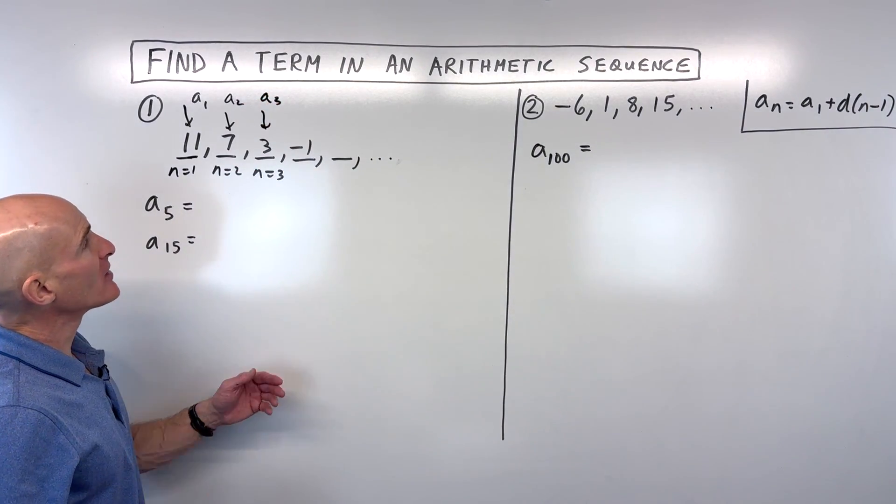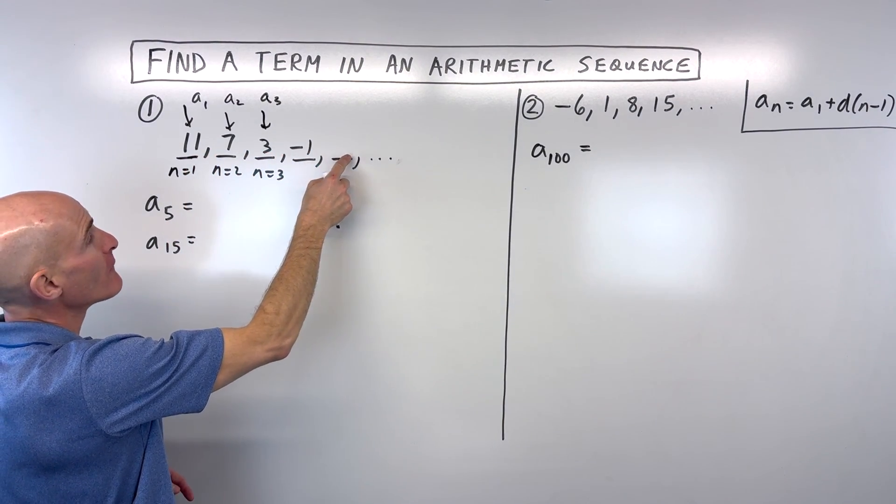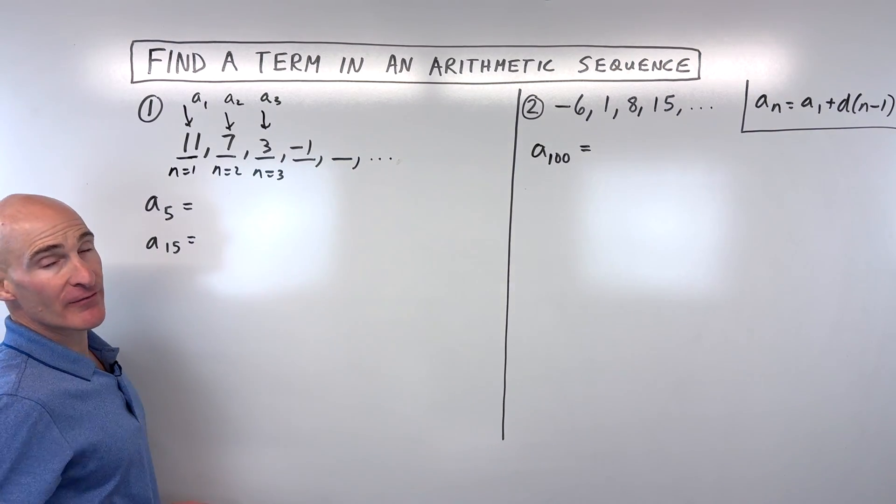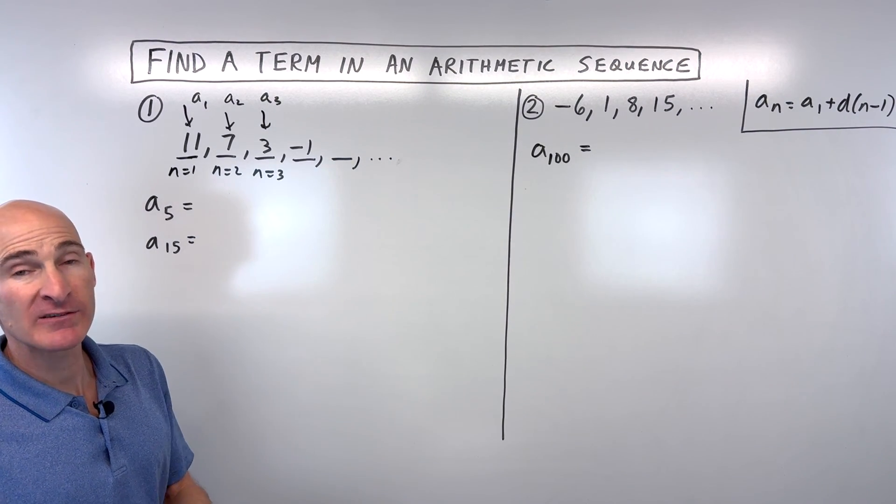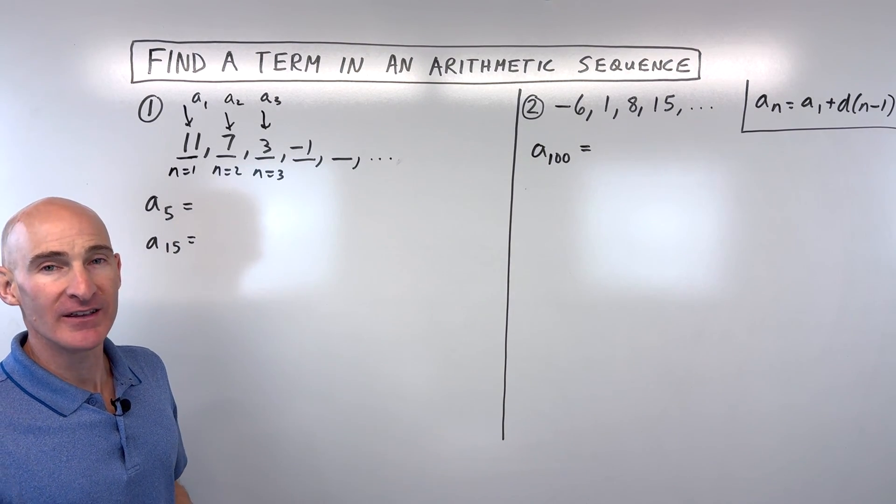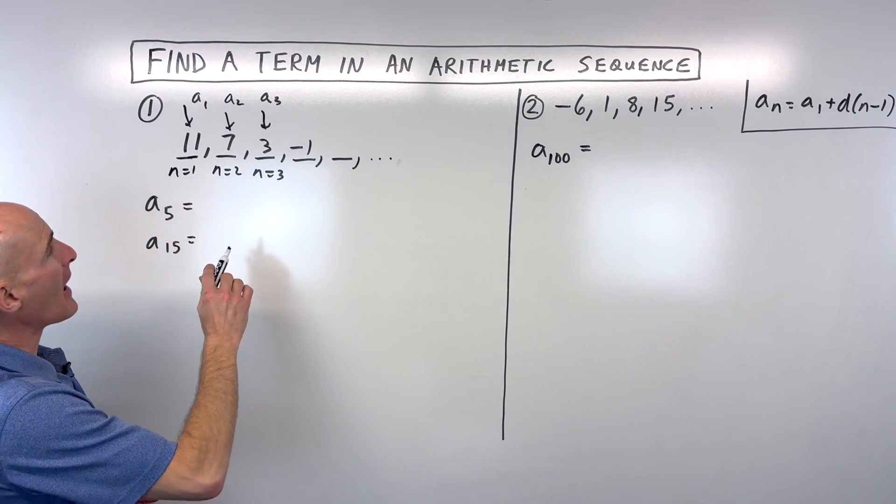So what we're doing here now, let's just say we wanted to find the fifth term. So we've got 1, 2, 3, 4, 5. Now you might be saying, Mario, I can just subtract 4 and I can find that term. But what happens if you want to find the hundredth term or the thousandth term? You wouldn't want to keep subtracting 4 forever and ever until you get to that term.